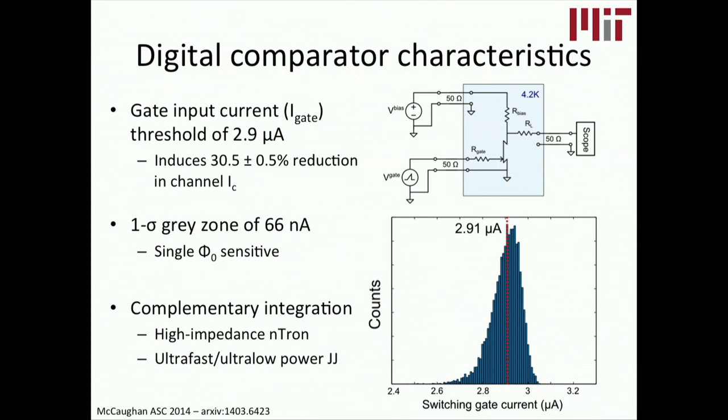If we add a little flux onto a loop comprised of the gate and the n-tron, hopefully we can actually create this very large output. And so we think it will be really a nice complementary integration with using the n-tron as a high impedance element and the ultra-fast and ultra-low power Josephson junctions as doing computing and logic.